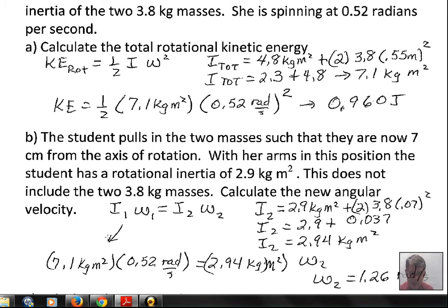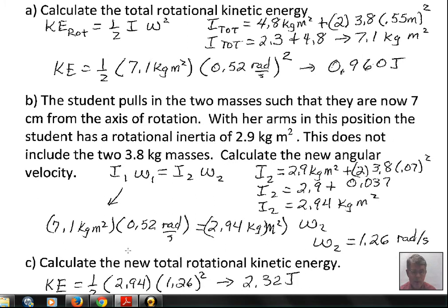The I value is smaller, so we expect omega to be larger. When I gets smaller, omega gets bigger to maintain the starting angular momentum. We calculate: 7.1 times 0.52—that was the initial omega. In the final case, we have 2.94 and ω₂. Calculate this yourself—I came up with 1.26 radians per second.